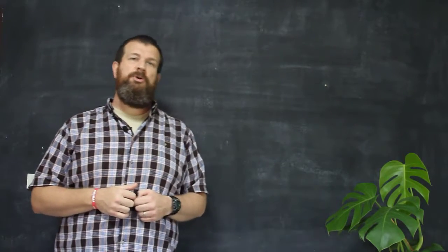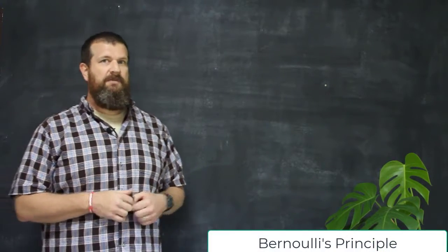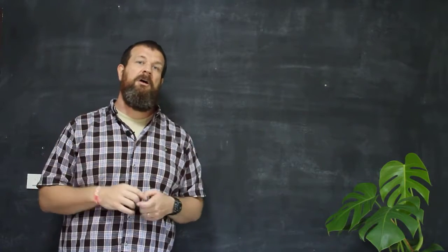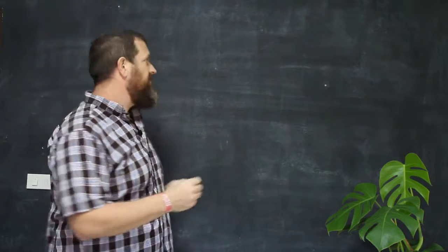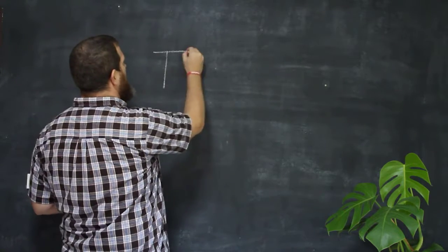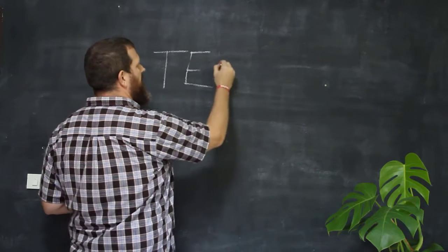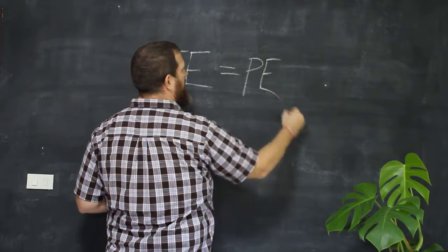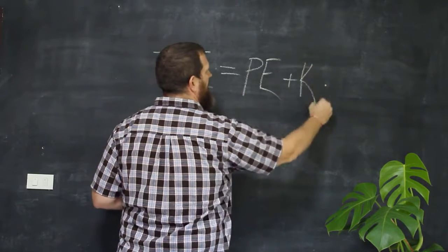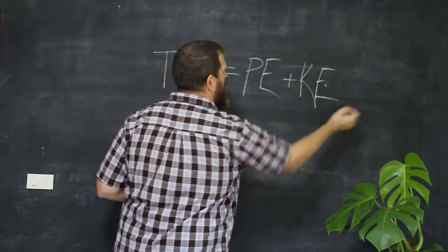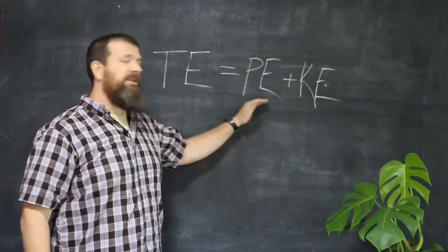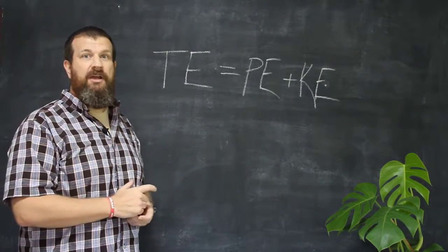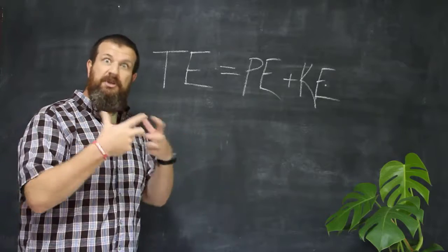Airplanes fly because of something called Bernoulli's principle. For those of you who are science nerds, Bernoulli's principle is a correlate of the law of the conservation of energy. The conservation of energy says the total energy, or TE, in a closed system equals the potential energy plus the kinetic energy in that system. Potential energy is the ability of something to act with force on something else.